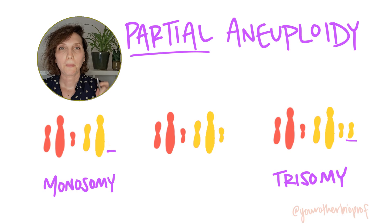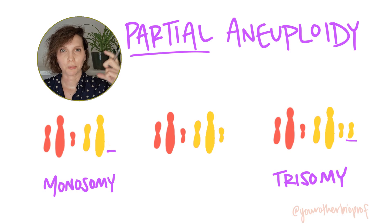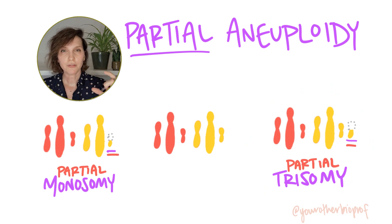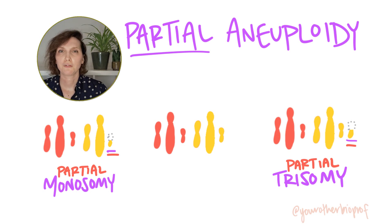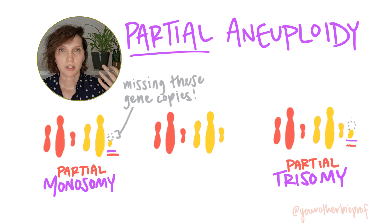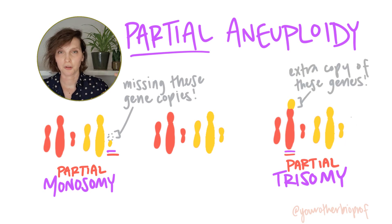As a side note, partial aneuploidies are also possible. So instead of an entire chromosome being absent — a monosomy in humans — or an entire chromosome being present as an extra copy — a trisomy in humans — just part of a chromosome could be present in abnormal numbers. That would be due to chromosomal breakage and fusion. A partial monosomy would be the result of part of a chromosome being lost, the genes of that region being lost, and the cell having just one copy of the genes of that particular region. A partial trisomy would occur when part of a chromosome is present in a third copy, and those genes are present in a third copy as well.